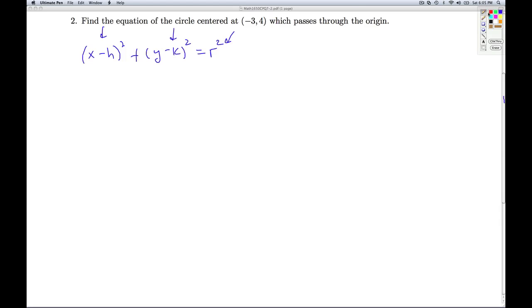So we're given right away that the center is (-3, 4). And the center of the generic circle is (h, k). Alright, so that tells us that -3 is h and 4 is k.